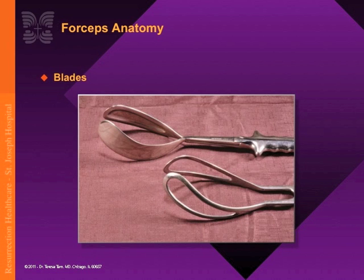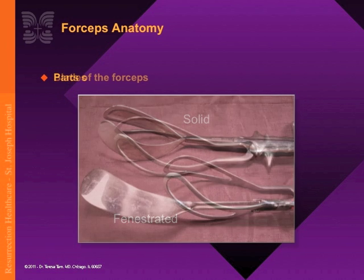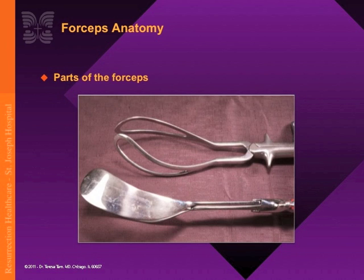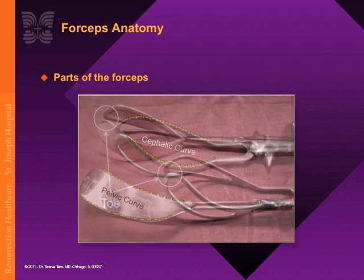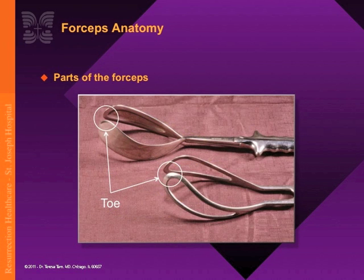All forceps have four basic parts. First, the blades, which could either be solid like the Tucker McLean, or have openings in the middle and be called fenestrated, like the Simpson forceps. The blades possess two basic curves: the cephalic curve, which fits the fetal head, and the pelvic curve, which conforms to the maternal pelvis. The most distal part of the blade is the toe, and the proximal part attached to the shank is called the heel of the blade.